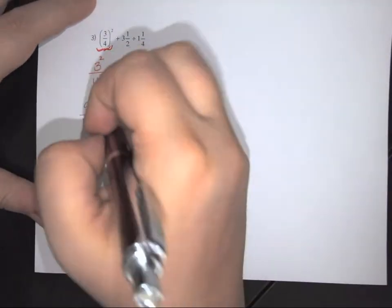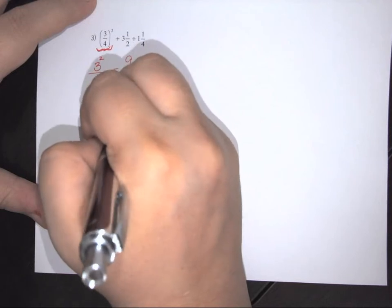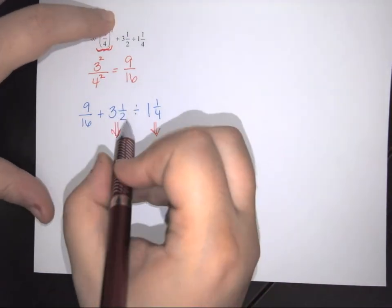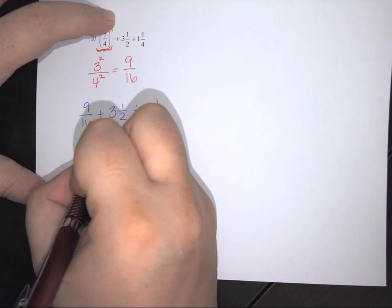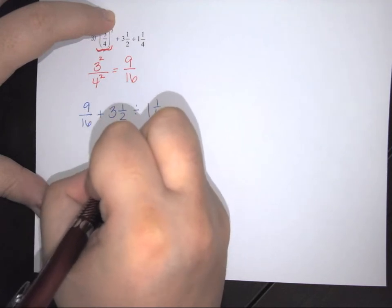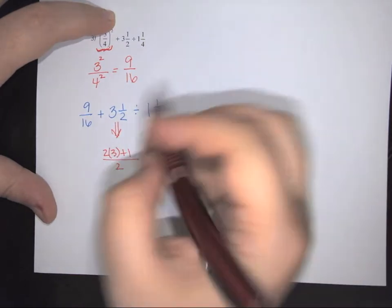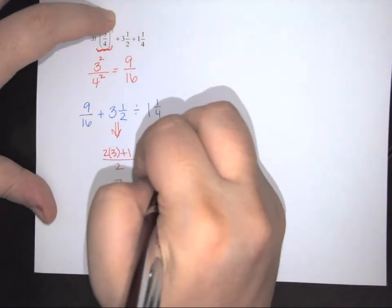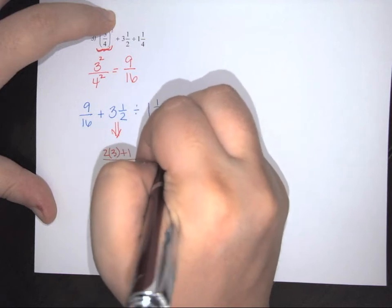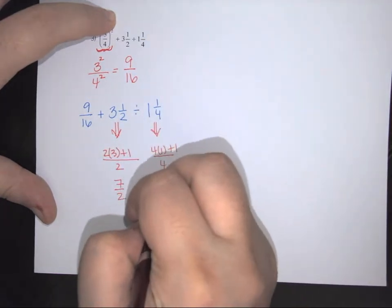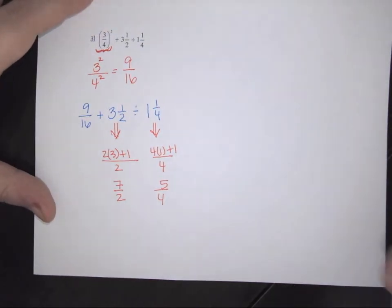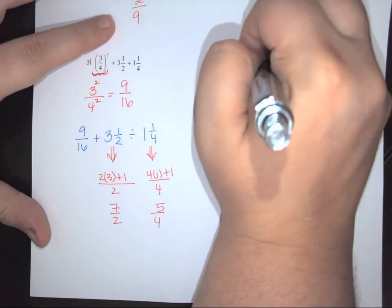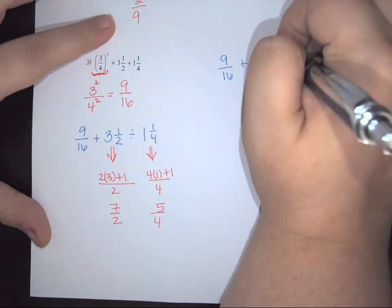Before I do anything else, I need to convert the mixed numbers to improper fractions. To convert, you do bottom times the big number plus the top, keeping the bottom the same. 2 times 3 is 6 plus 1 gives me 7 halves. Same with the other: the bottom is still 4, and this becomes 4 times 1 plus 1, so 5 over 4. I rewrite: 9 over 16 plus 7 over 2 divided by 5 over 4.